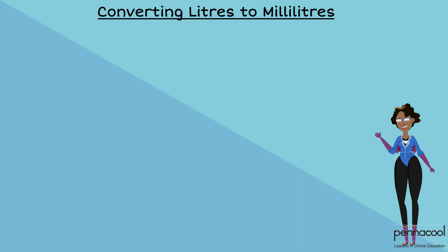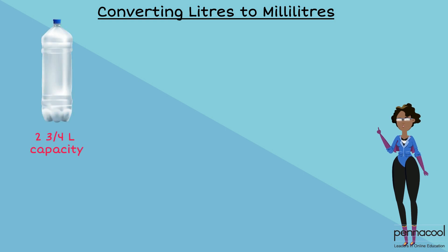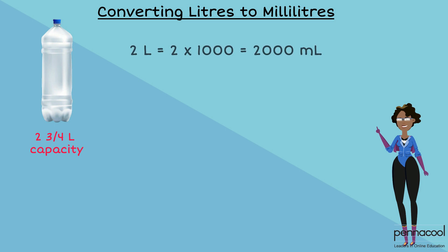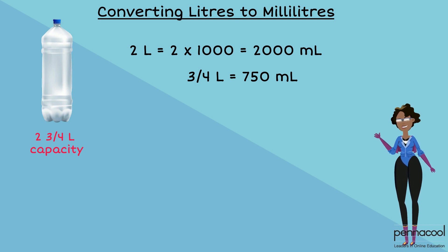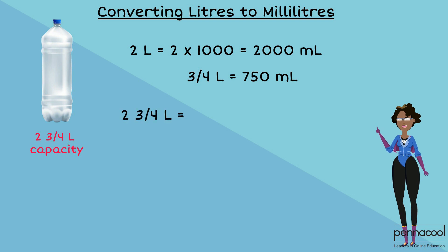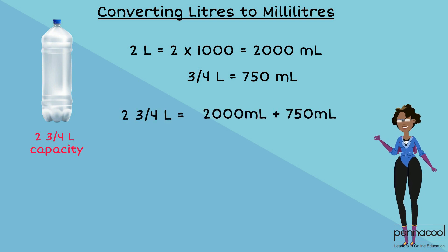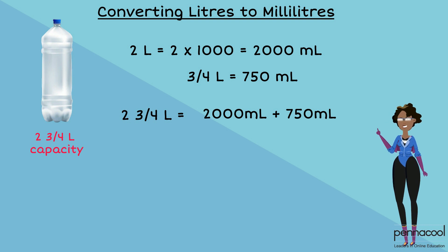How can we determine the capacity of a container that holds two and three quarter liters of water? Two liters is equal to 2000 milliliters, while three quarter liter is equal to 750 milliliters. This gives us a total of 2715 milliliters.